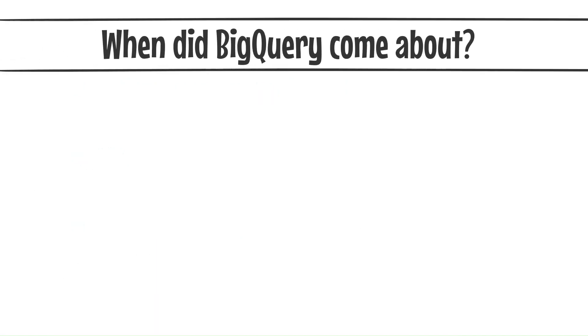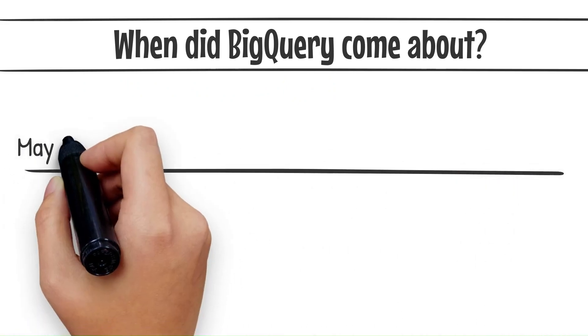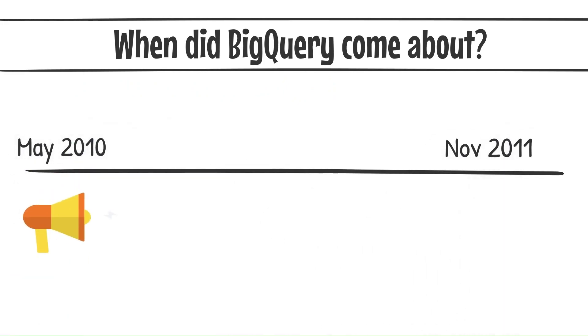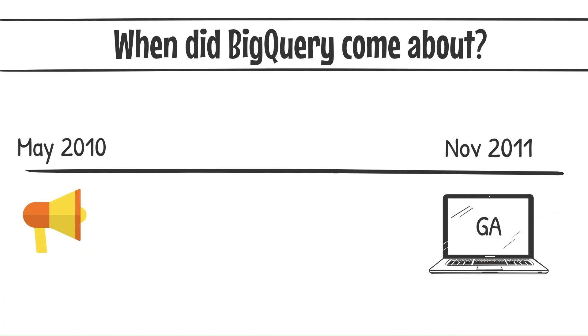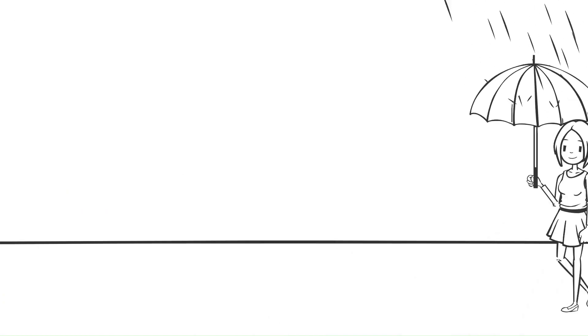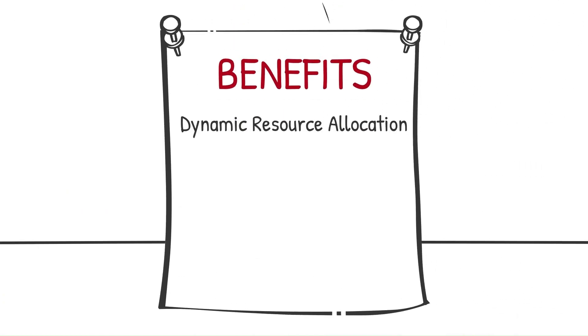When did BigQuery come about? BigQuery was announced in May 2010 and made generally available in November 2011, so it's been around for over a decade. What are some benefits of using BigQuery? There are many, but here are just a few.